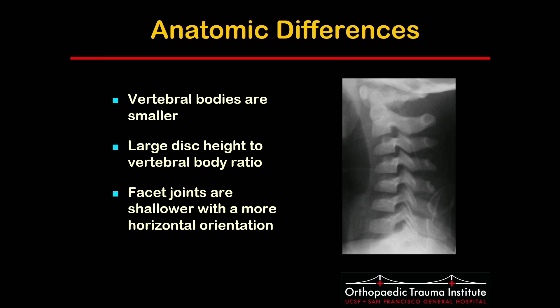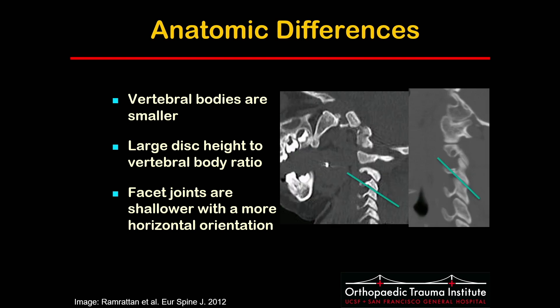The vertebral bodies are smaller, and disc-to-vertebral body ratios are larger, owing partly to immature non-ossified end plates, which leads to more motion across a given segment. The facet joints are also shallower, with the angle of the facets being 30 degrees in the younger population, increasing to 60 to 70 degrees by age 10, similar to adults. This decreased slope also allows more translation across the level.